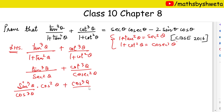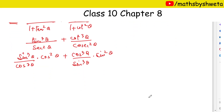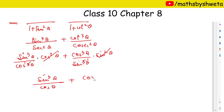After substituting, we get cos³θ upon sinθ for the cot terms. So we have sin³θ upon cosθ here, and cos³θ upon sinθ here, with sinθ cosθ as the base denominator.